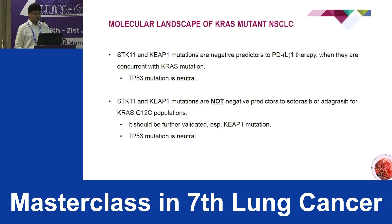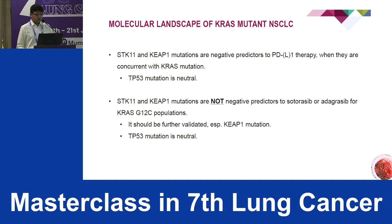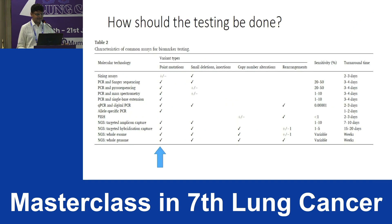These concomitant mutations have a significant effect on treatment planning. STK11 and KEAP1 mutations are negative predictors for immunotherapy when concurrent with KRAS mutation, while TP53 is neutral. However, STK11 and KEAP1 mutations are not negative predictors when a KRAS G12C inhibitor — sotorasib or adagrasib — is given.